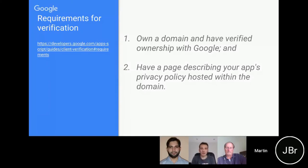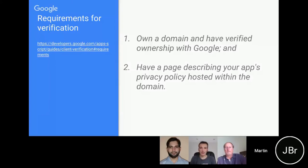The second requirement is a public-facing website on your verified domain where you can host your privacy policy. You also need to provide information on the scopes you're using and why you're using them. There's more documentation on all of this on the website — these are additional requirements for Google Apps Script developers who want to publish web apps, add-ons, or other script projects using sensitive scopes.